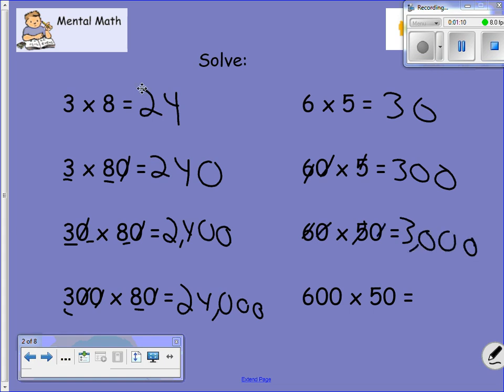A common thing is some kids count the zero in the 30 as one of their zeros. It's not. You have to multiply the six times five first. Six times five. I get 30. Now I have to add the three zeros. One, two, three.